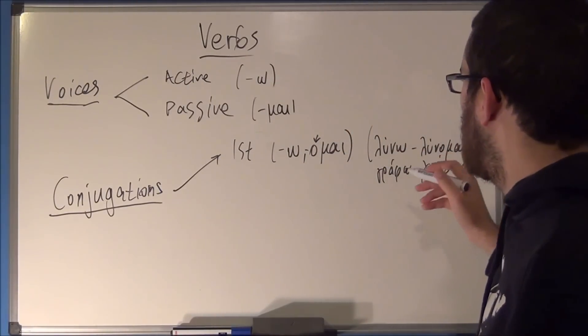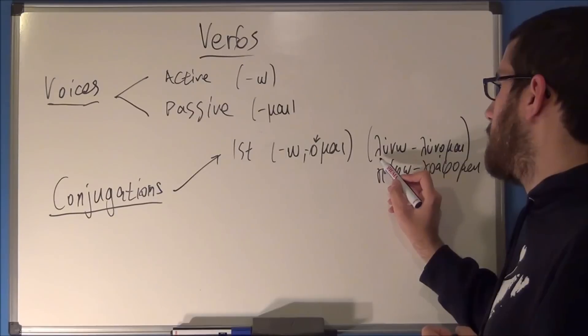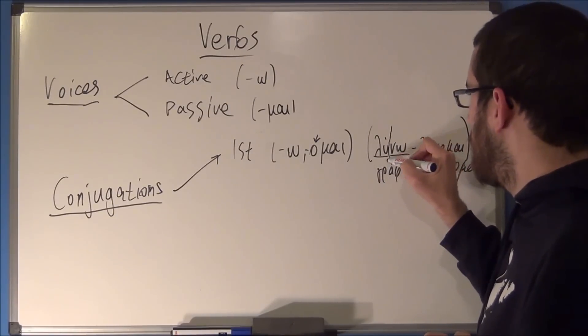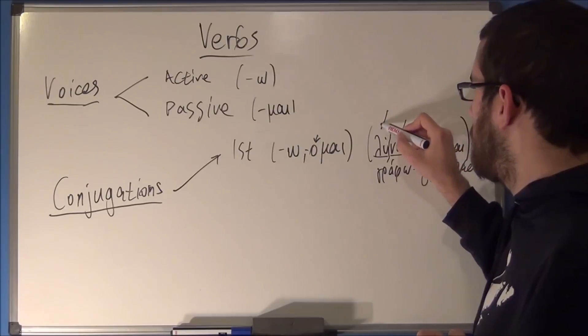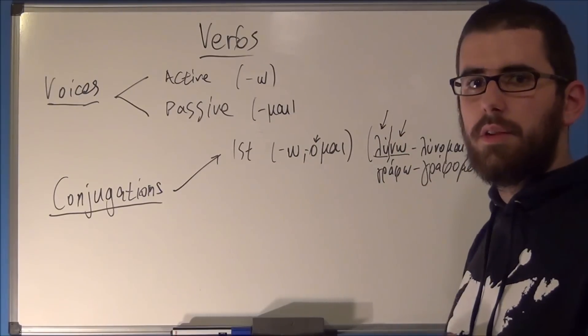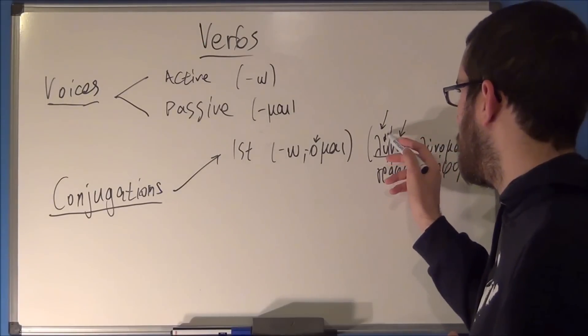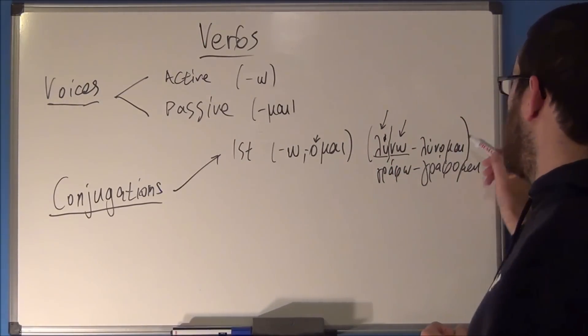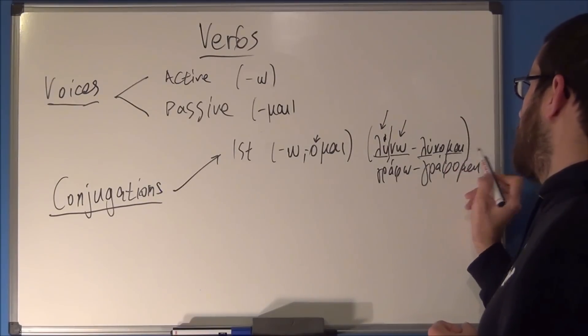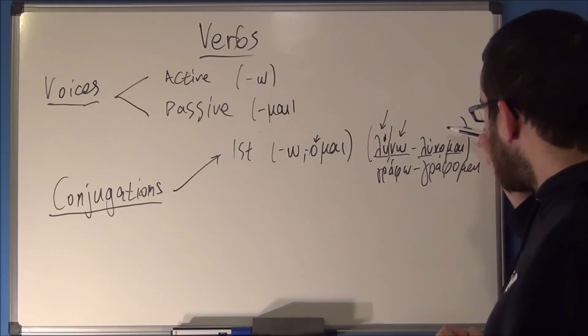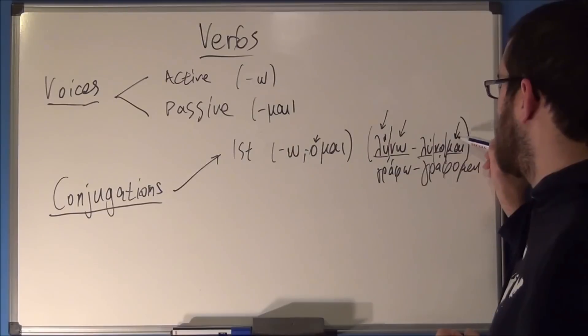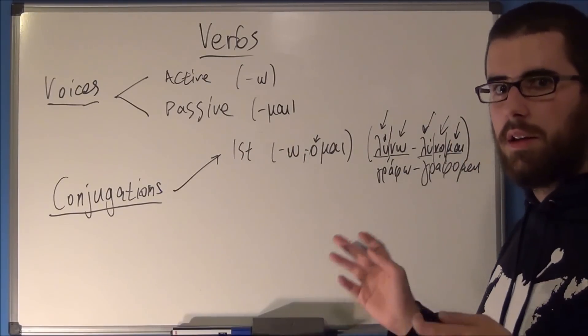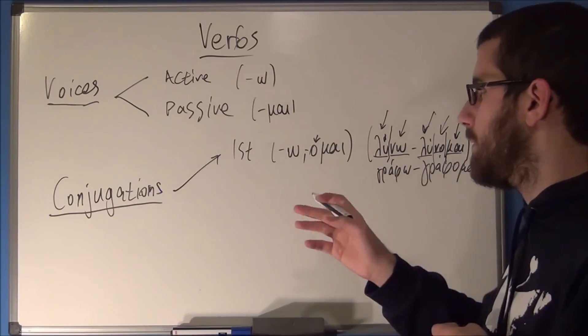In this case, you have two syllables, for example, in this verb LINO. If this is the ultima, this is the penult, and as such, you have the accent in the penult. So this belongs to the first conjugation. Here, LINOME, you have three syllables. This is the ultima, penult, antepenult, and the accent is in the antepenult, and as such, it belongs to the first conjugation.